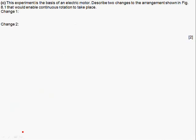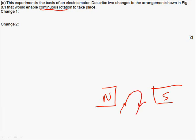This experiment is the basis of an electric motor. Describe two changes to the arrangement shown in figure 8.1 that would enable continuous rotation to take place. So at the moment, we've got this north-south magnet and we've got this one wire which is going to have a current flowing through it, which we've just worked out would move downwards. If you wanted to have that to start to twist or turn, then making it into a loop would mean that one side is going to be pushed down, one side is going to be pushed up. We've got the beginnings of a twisting action. The only problem is that this can only get to a certain point before it can't turn in its current state.